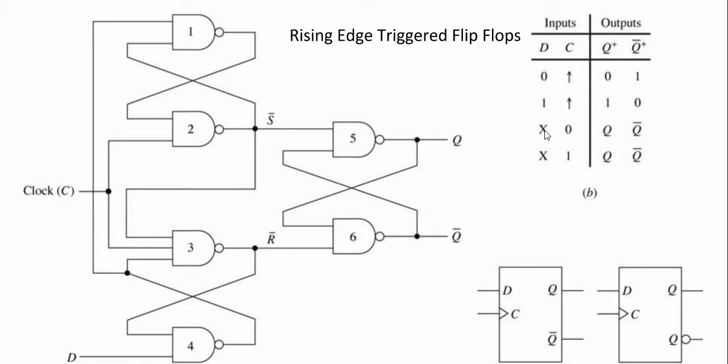If the clock's a zero, it doesn't matter what the input, it's just going to remember. If the clock's a one, it doesn't matter what the input is. It's just going to remember. This is why we want the clock going as fast as possible.